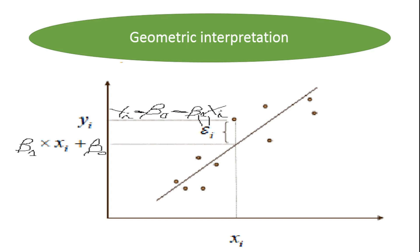The error committed is the difference between the actual realization of the dependent variable and what the realization would have been if we had supposed that the point of abscissa x_i belongs to the line. So the error is the difference between the actual realization and the predicted value.